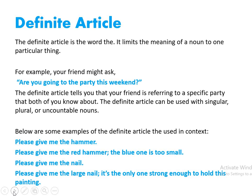Here are some examples of definite articles in different contexts: 'Please give me the hammer.' 'Please give me the red hammer — the blue one is too small.' 'Please give me the nail.' 'Please give me the large nail — it is the only one strong enough to hold this painting.' In all these sentences I am speaking about one specific nail and one particular hammer, so I use 'the.' Had it been any hammer, I would say 'please give me a hammer.'